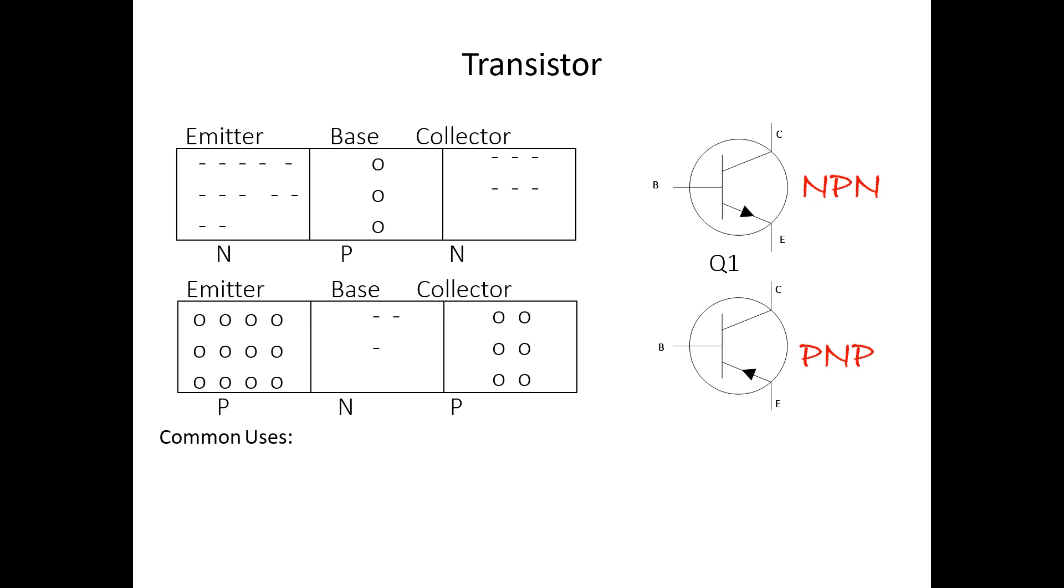If you look over to the right you'll see the schematic symbol and the label for each one. Transistors are commonly used as three of the following things: amplifiers, oscillators and electronic switches, all of which you'll see over the next 17 days.